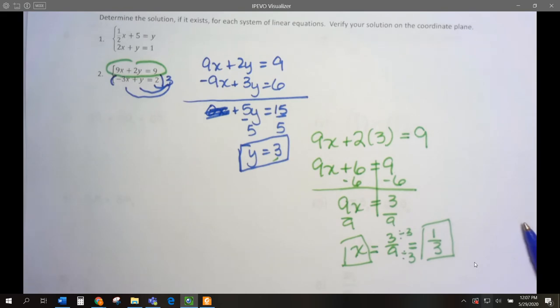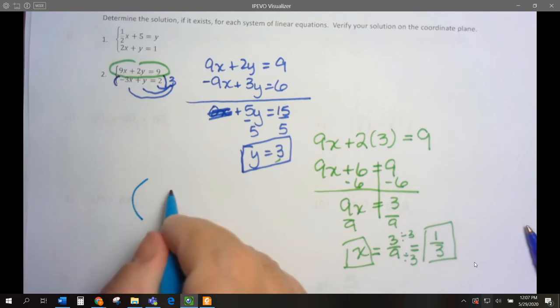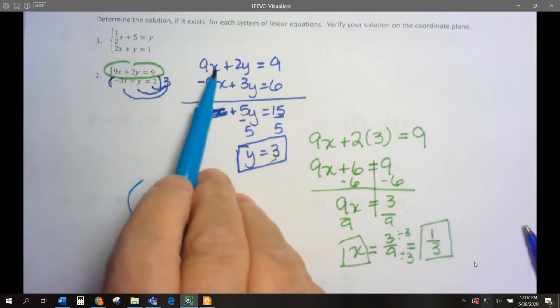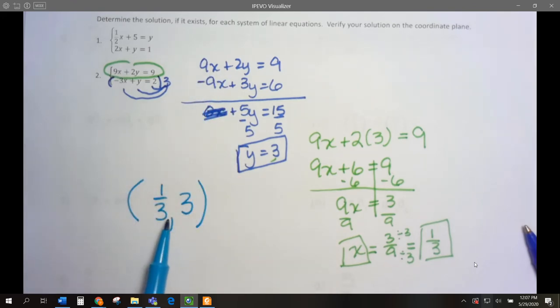So x is 1 third and y is 3. Our solution to this problem is 1 third is our x and our y is 3. If you graph these equations in GeoGebra, you will notice that the lines intersect at the point 1 third, 3.